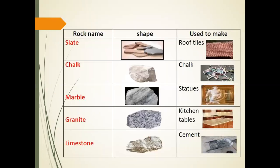Here is a revision of all the rocks. Slate — used to make roof tiles. Chalk — used to make chalk for writing. Marble — used to make statues. Granite — common in kitchen tables. Limestone — used to make cement.